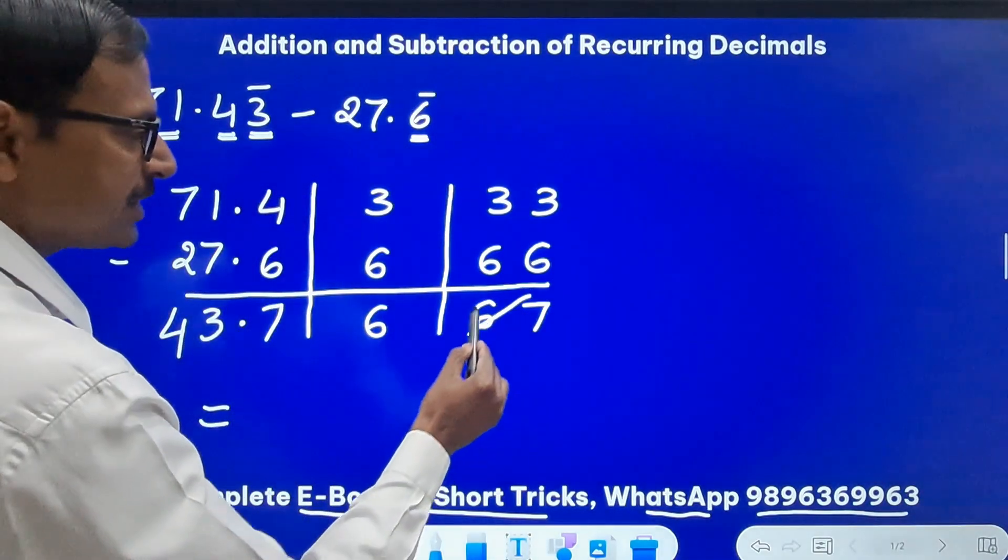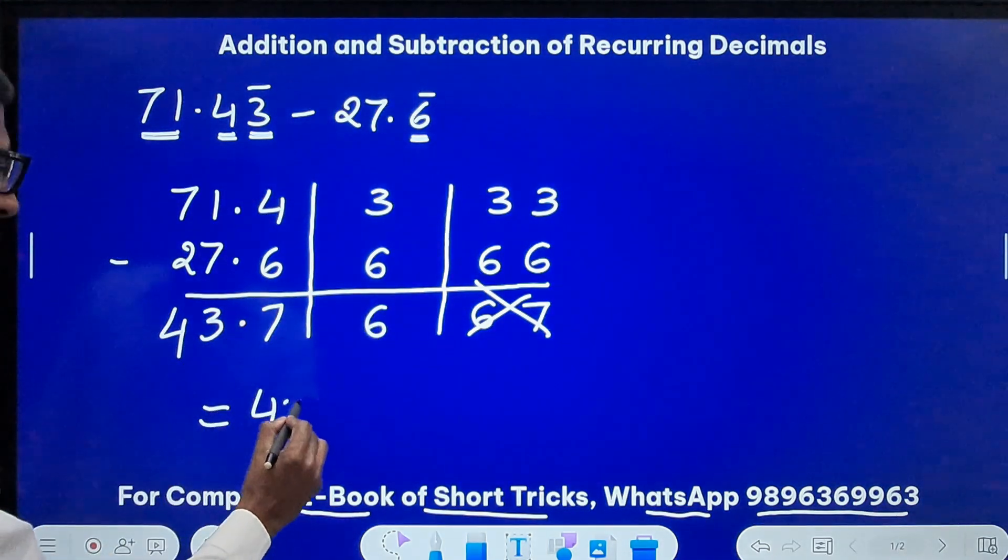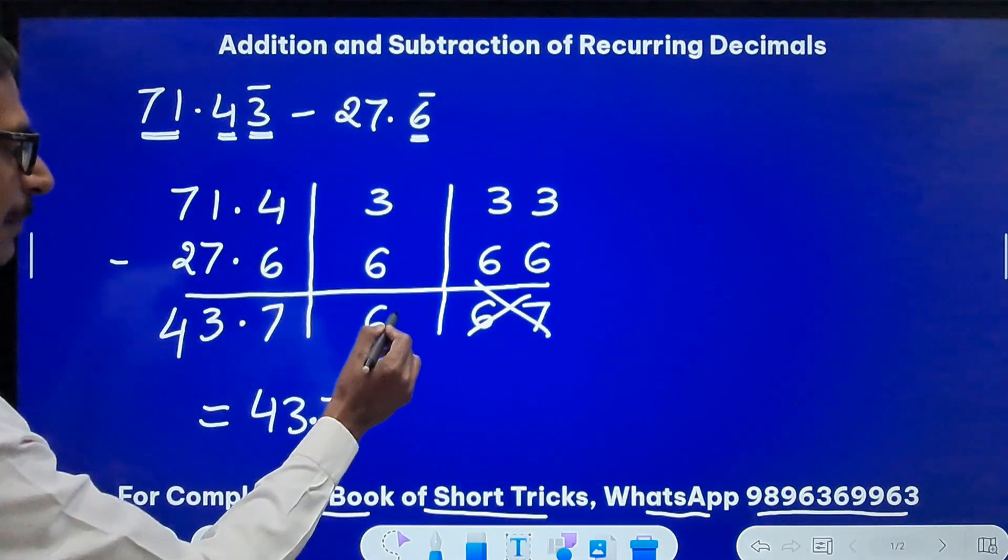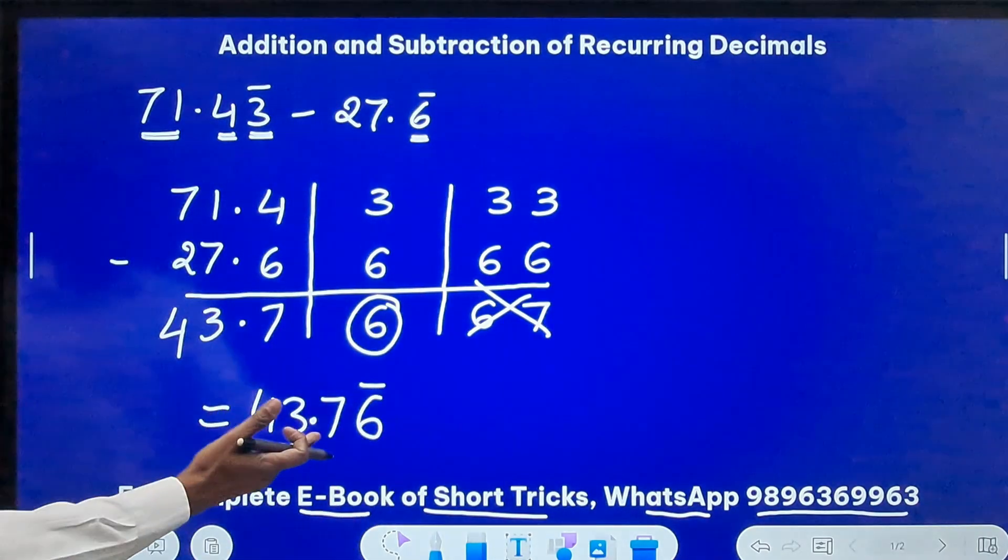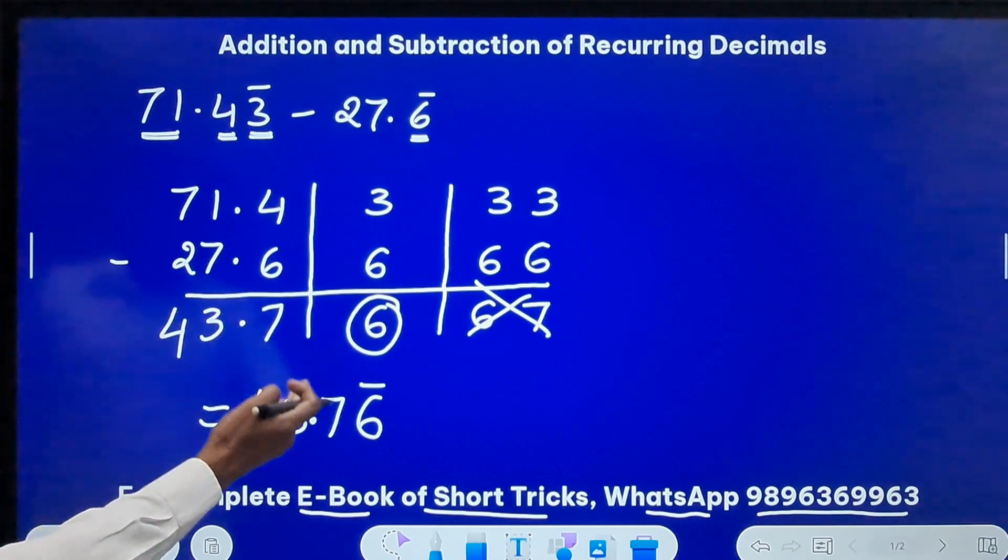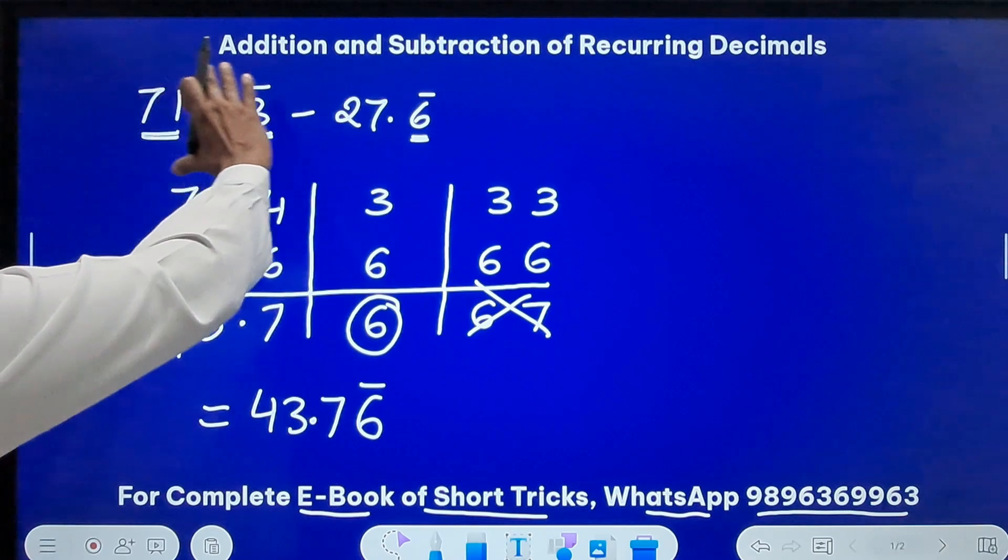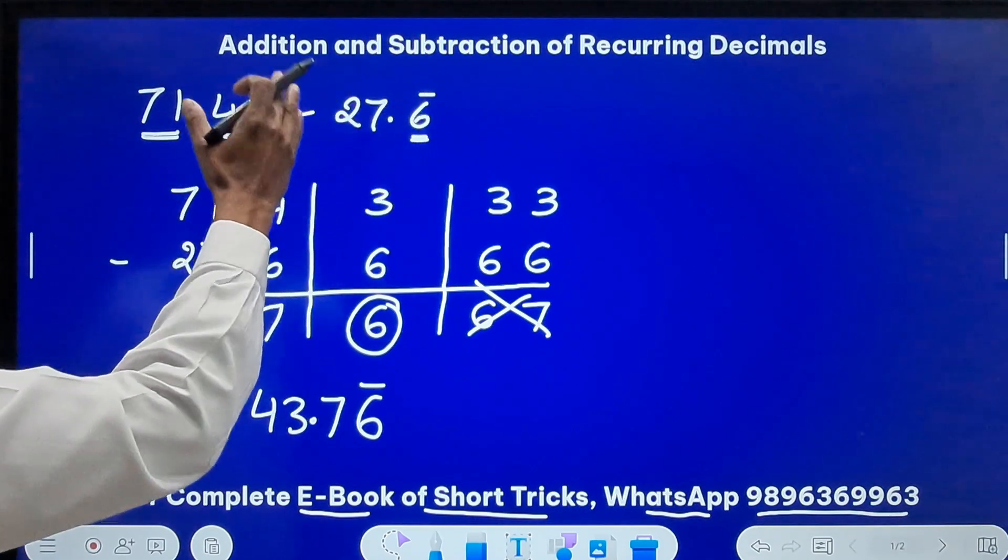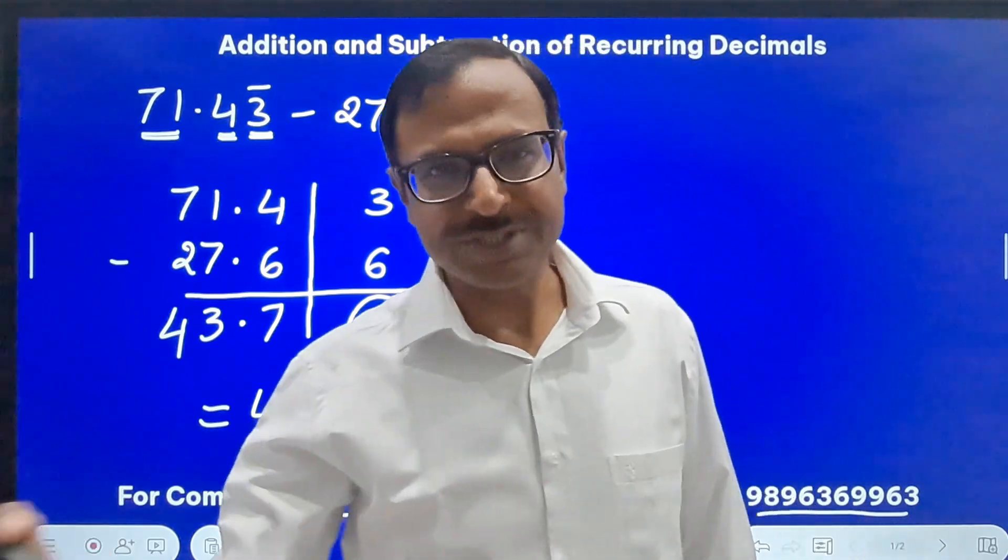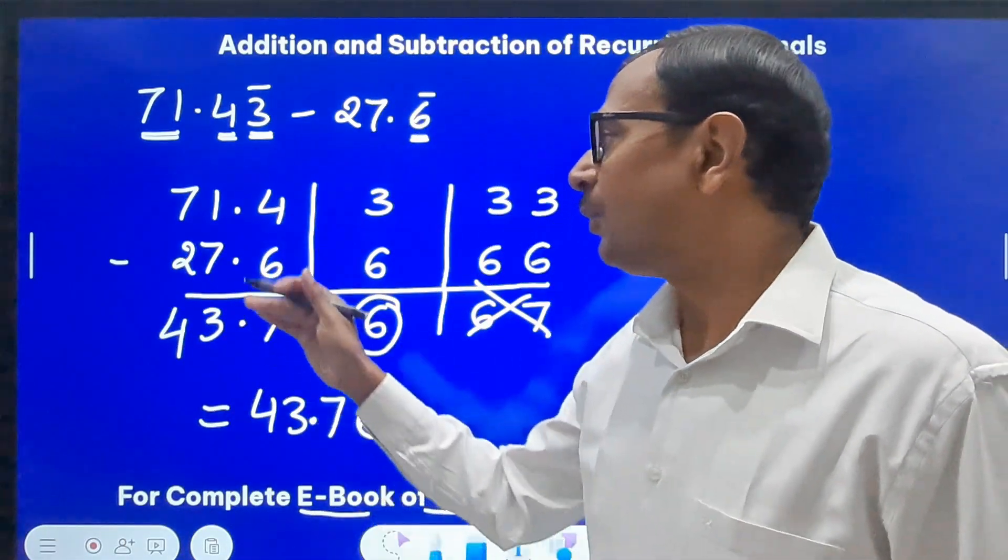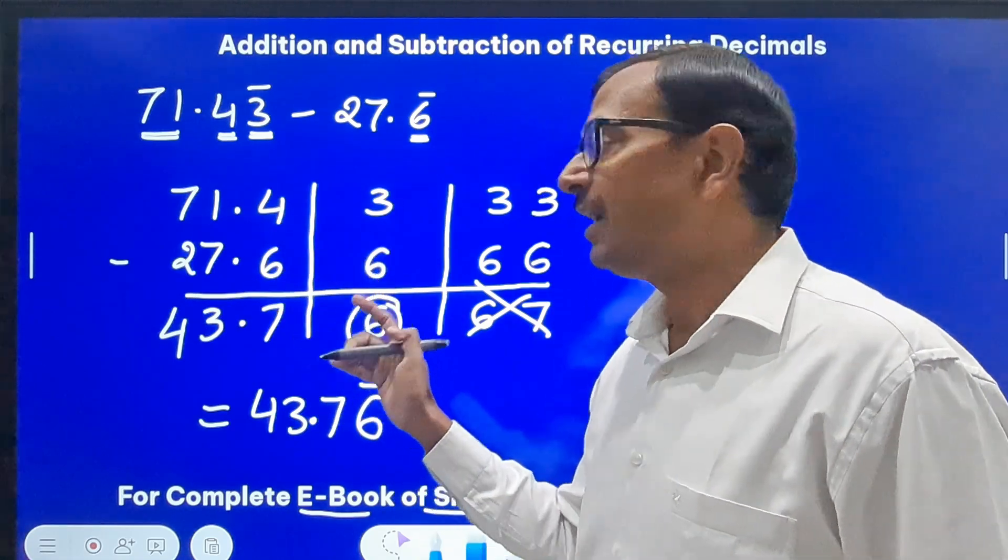Now what is the answer? The answer, just ignore this part and write this part 43.7, and the middle part will be your recurring part. So the answer for the question is 43.76 bar. That means 43.766666 is the difference of these two recurring decimals. I hope you have understood at least 50 to 60 percent of what I have here, why I have taken these many digits here, why I have taken these many digits here, why only one digit in the middle and why two digits here.